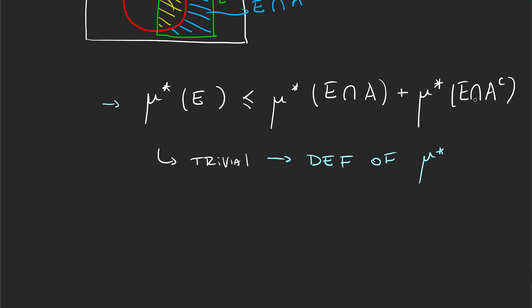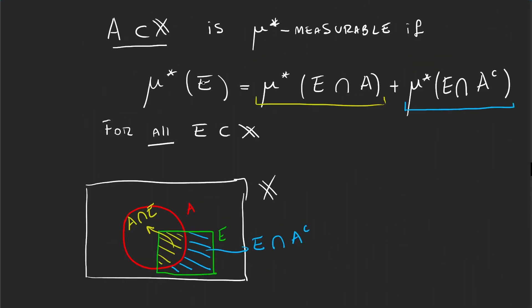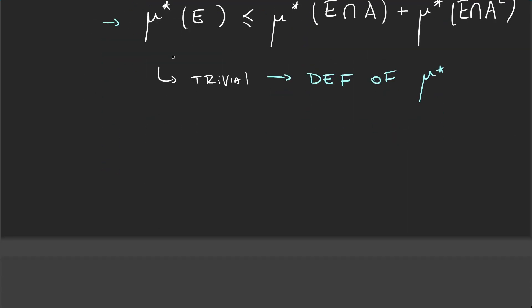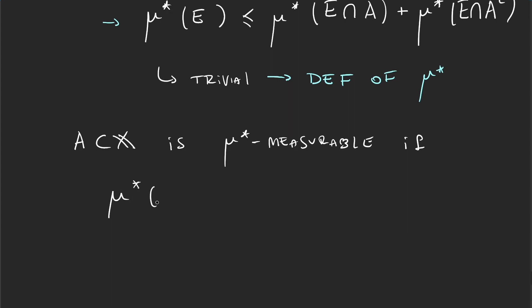And so if this inequality is trivial, given a set A, in order to prove this for all E subsets of X, we should prove the greater than or equal. So in general we will say that A subset of X is μ* measurable if μ* of E is greater than or equal to the other two terms.